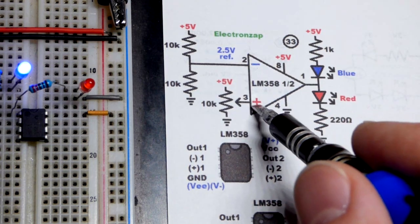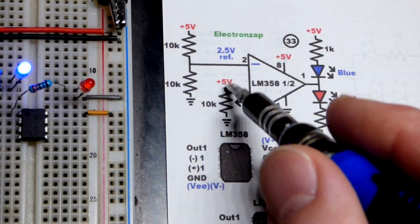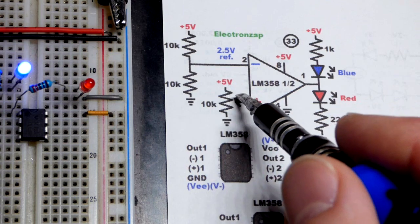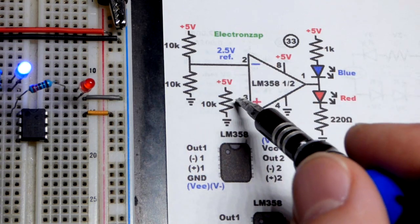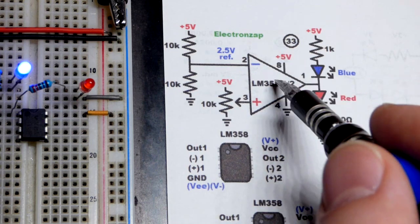Now, when we have the trim pot, which is going to the non-inverting input, we started off with a higher voltage, closer to 5 volts than to 2.5 volts. That was a higher input than what we set there. So the output was high.